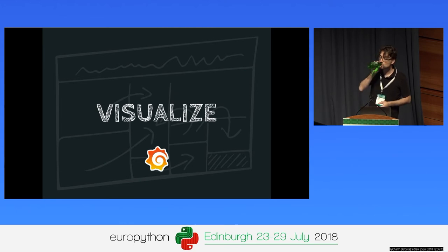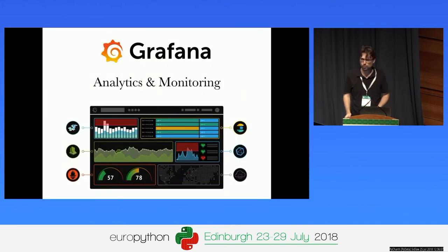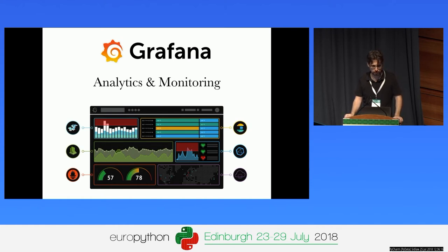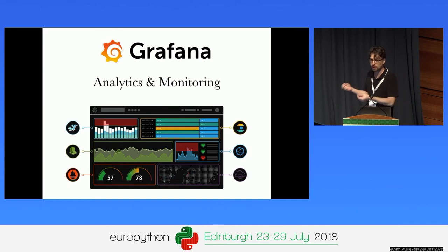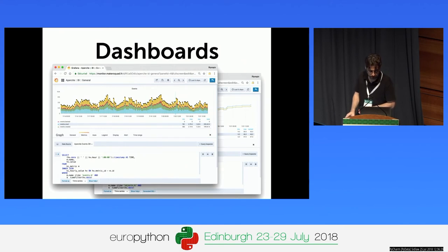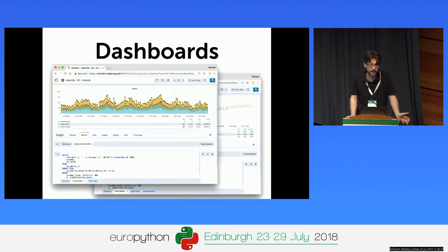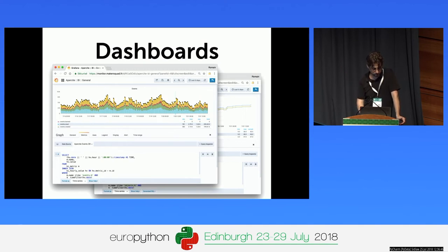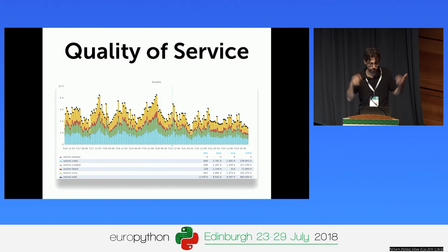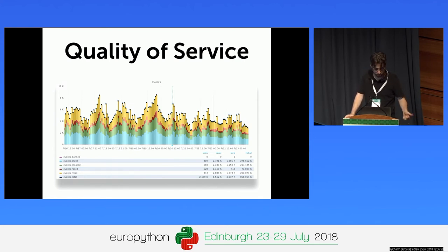We already have a Grafana instance installed, so it will be easy to take those metrics and make graphs. Grafana is quite old software — a fork of a similar tool — and its goal is to connect data sources and graphically configure graphs by making queries. The interface is simple: a query editor, you put the query, and you get the graph. For example, this graph shows how many miss, created, and failed events we got every hour, so we can compute ratios.